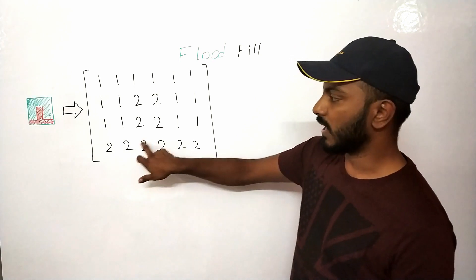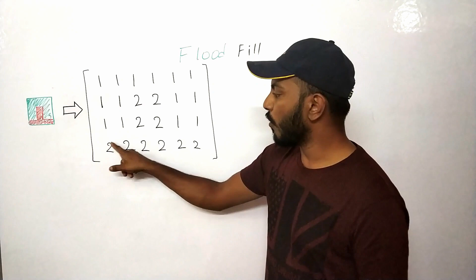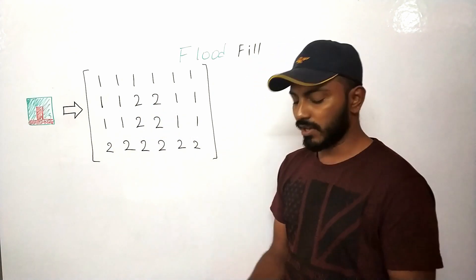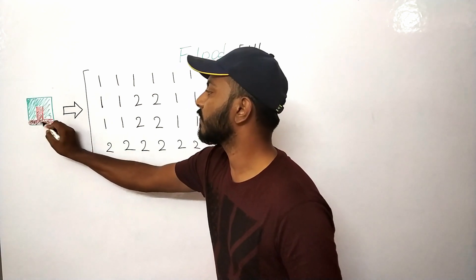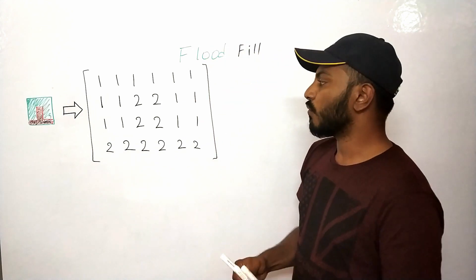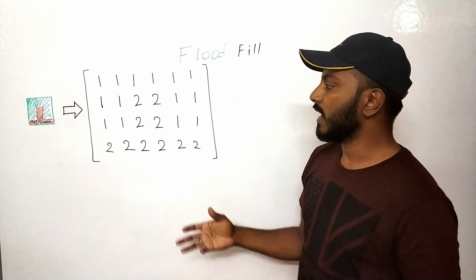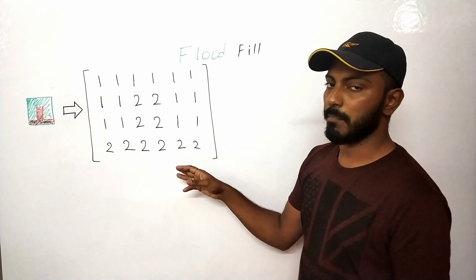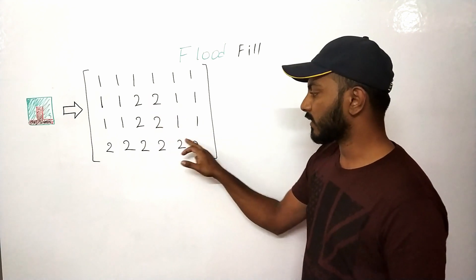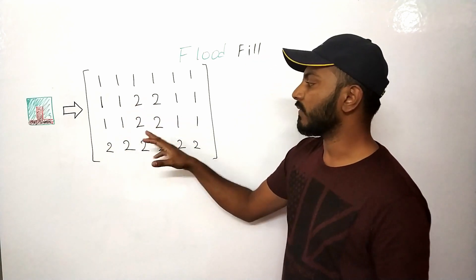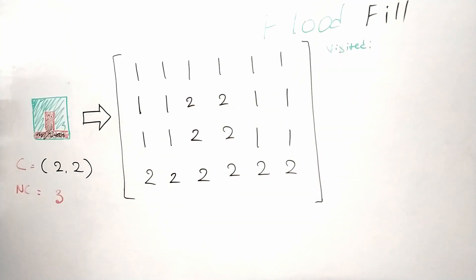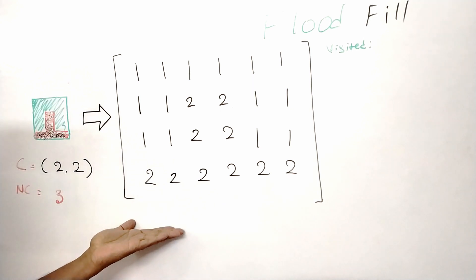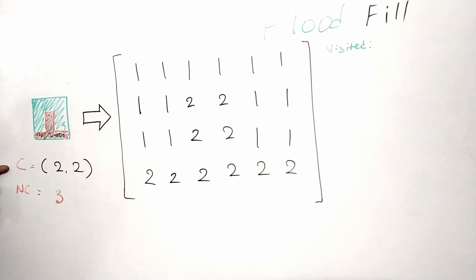In this image, all the red color is represented with the value two, and all the green color is represented with the value one. Now if I take the bucket tool and click on the red section, the whole red section should be colored as black — represented by value three. What we need to do is traverse the two-dimensional matrix, find the connected network of this red color, and replace it with the new color.